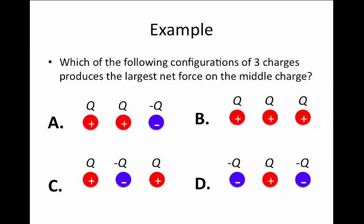In each case, the charge in the middle experiences a force from the charge on the left and from the charge on the right. In choice A, the force on the middle charge is actually the largest. The charge on the right exerts an attractive force toward the right on the middle charge, while the charge on the left exerts a repulsive force also toward the right. Since the two neighboring charges are equidistant, these forces have equal magnitude and point in the same direction, and by superposition they add together to give a net force twice as large as either individual force.